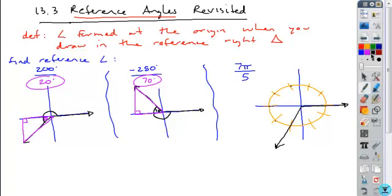And so when I draw my reference triangle, it can be anywhere along this terminal side, vertical line to the x-axis. And the angle that's formed at the origin is my reference angle. And so when I look at this, I can see this angle right here represents how many fifths. Here's 1, here's 2. So I can just count that. My reference angle is 2/5 π.